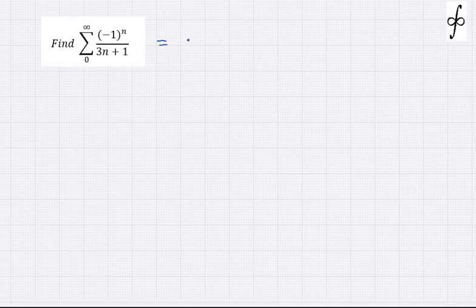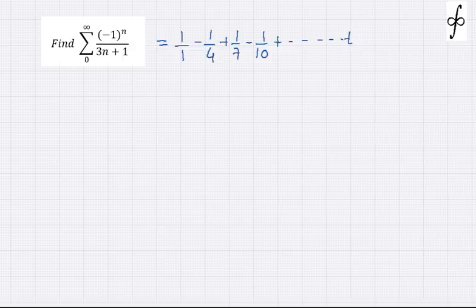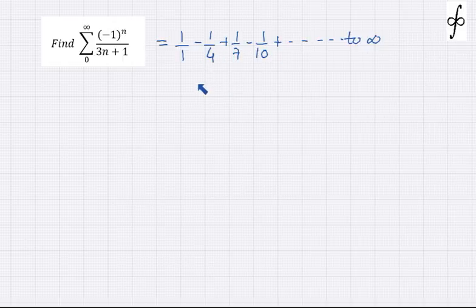Let's take this interesting problem. We need to find out the series 1/1 - 1/4 + 1/7 - 1/10, continuing to infinity. Two important aspects: in the denominator we have 1, 4, 7, 10 — an arithmetic progression. This type of AP in the denominator generally appears in the log series.